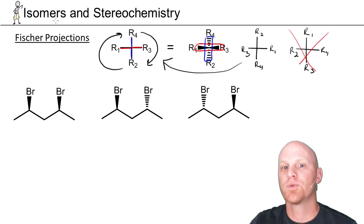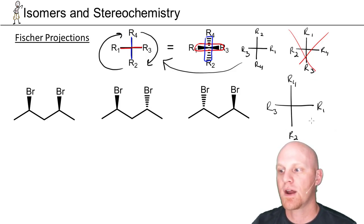You're also not allowed to rotate it out of the plane 180 degrees either. So if we try to rotate it out of the plane 180 degrees, and maybe put R3 here and R1 here, and left R4 and R2 right where they were, this would actually give you its enantiomer. This would not be equivalent to our original Fischer projection.